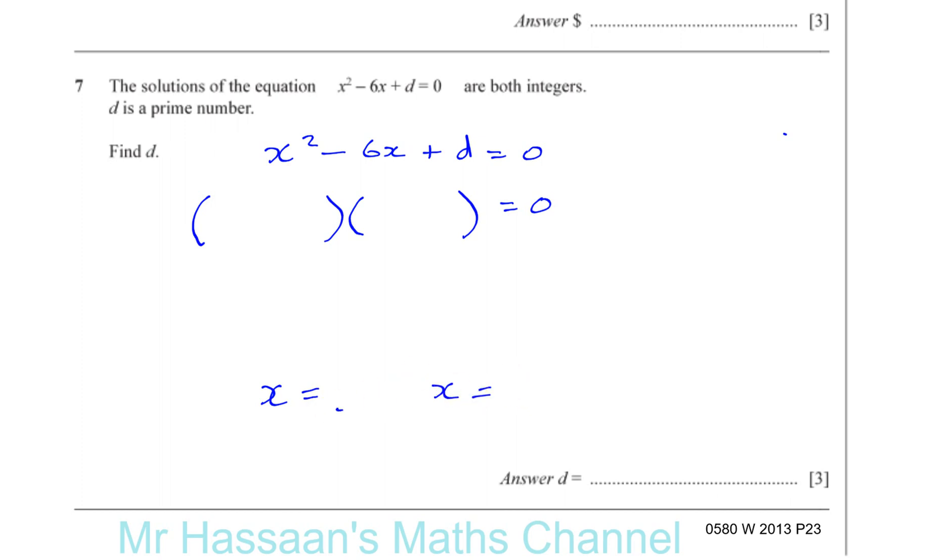So now, if they're integers, you've got here x and you've got x, that's what we know for sure. Now, they're both integers, whole numbers, and d is a prime number. That means one of these has to be a 1.